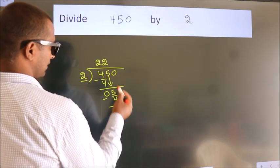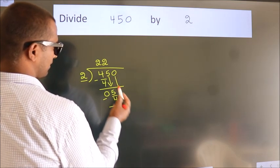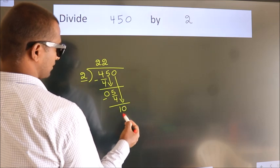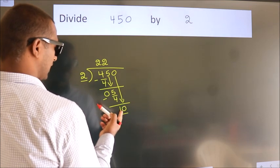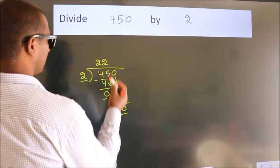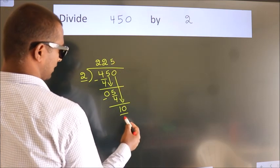After this, bring down the beside number. So 0 down. So 10. When do we get 10? In 2 table. 2 5s, 10.